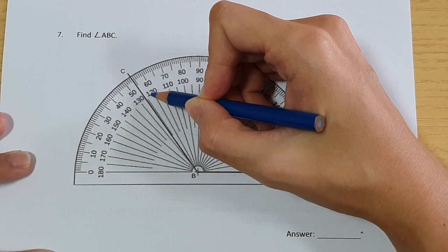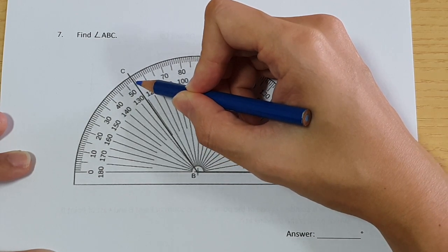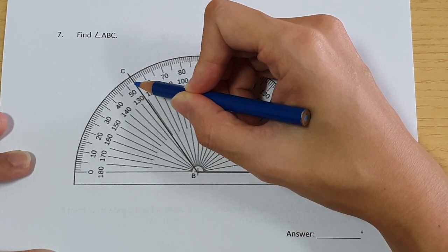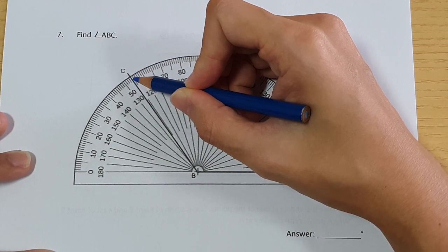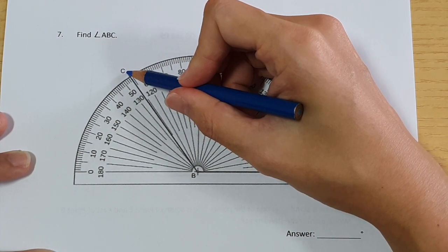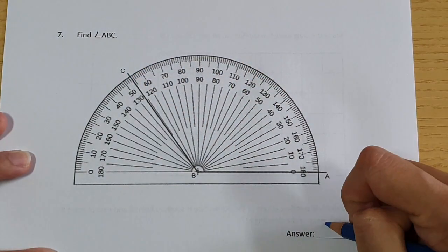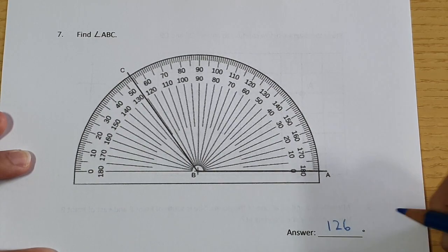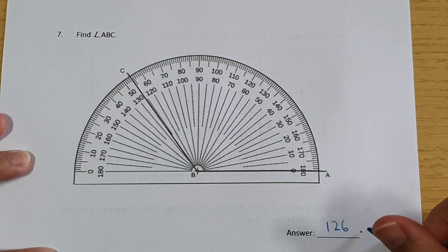So this is 120, this is 125. It's a little bit more, one more actually. So it's 126. 126 degrees. The degrees is already here.